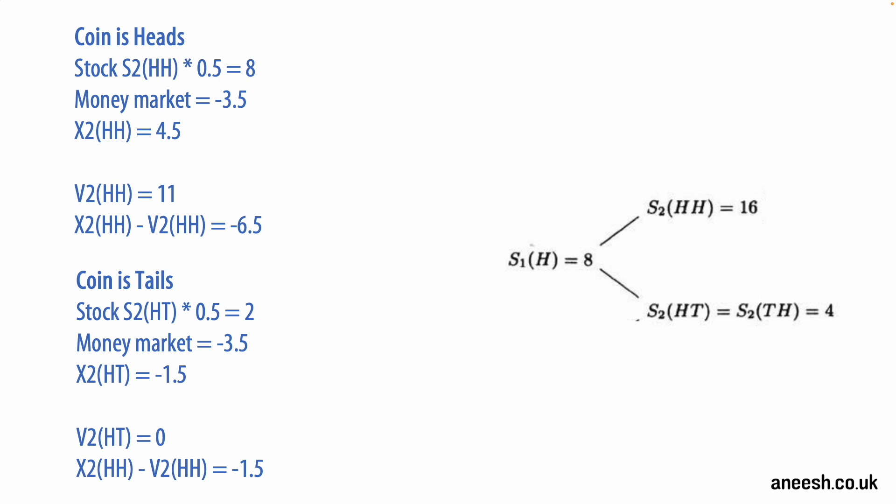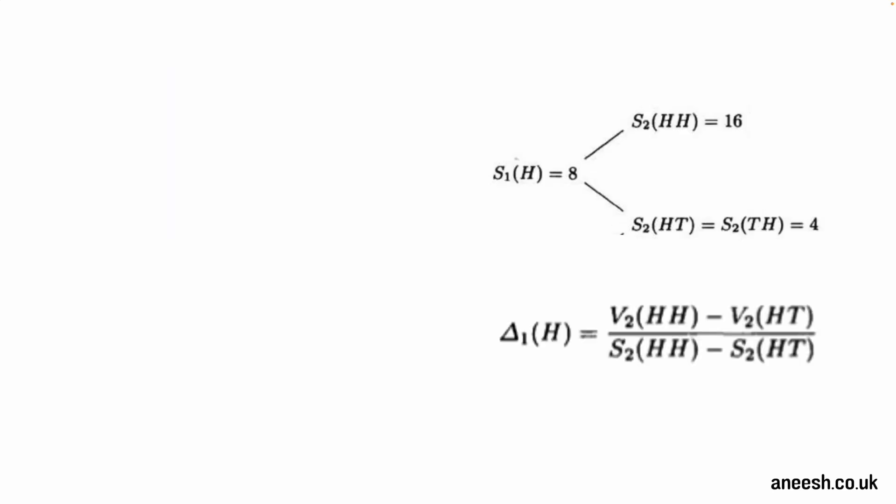We can now begin to calculate our expected delta position after each time period using the information of the stock price movement to drive our decision. If we assume the first coin flip is heads, we could begin to work out the delta head required using the future values of V2(HH), V2(HT), S2(HH) and S2(HT).